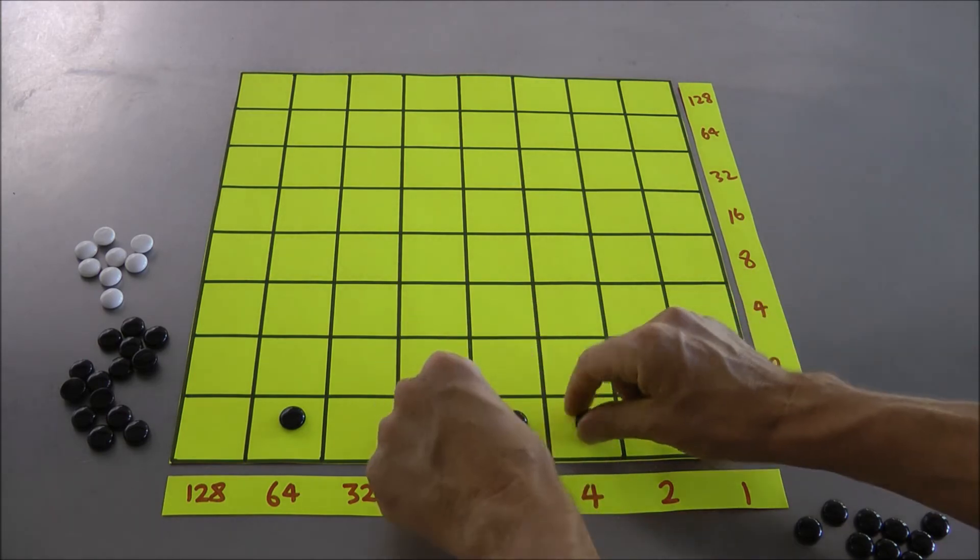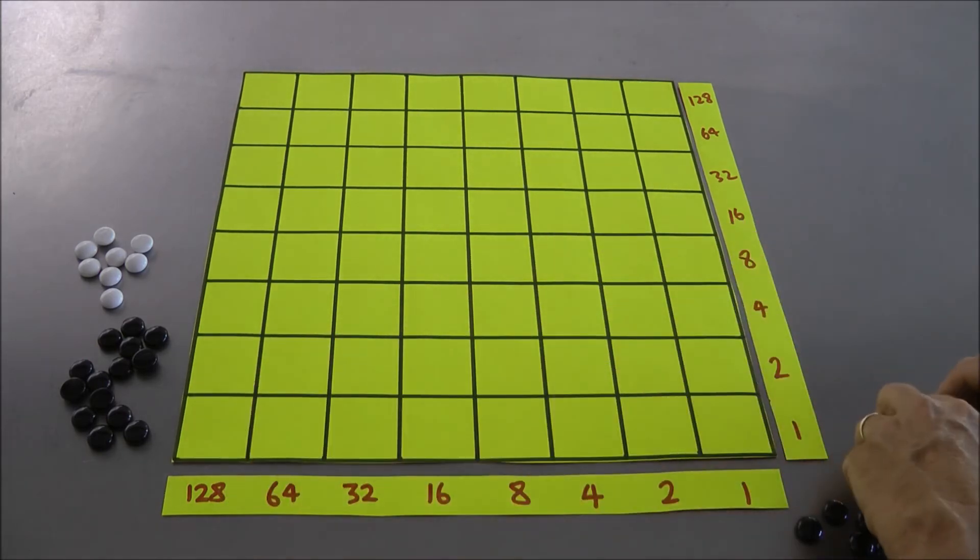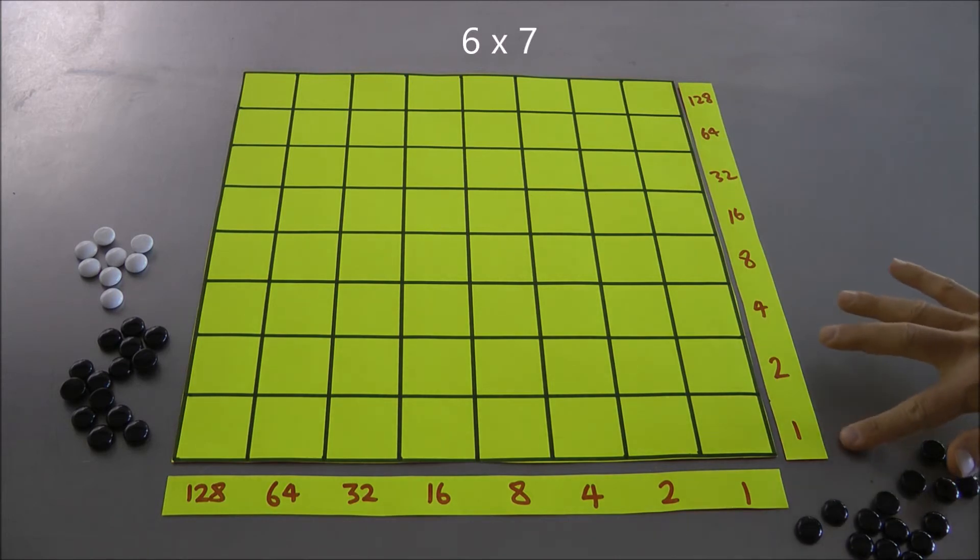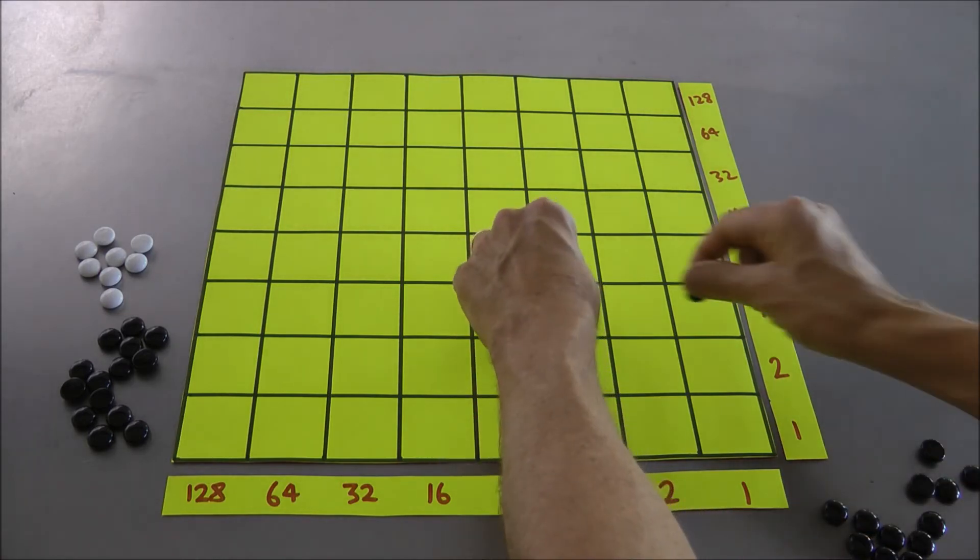Well, let's do another one. Let's do say 6 times 7, and see if we get the answer 42. 7, so that's going to be a 1, a 2, and a 4. So I'm going to use these three rows, and I want 6 times 7. So I want 6 times 4, 6 times 2, and 6 times 1.